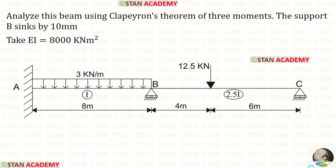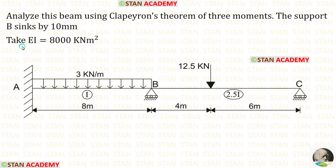Hello everyone, today we are going to analyse this beam using Clapeyron's theorem of three moments. In this beam, the support B sinks by 10 mm. The flexural rigidity EI is given as 8000 kNm². Before analysing this beam, let us see the beam one time.